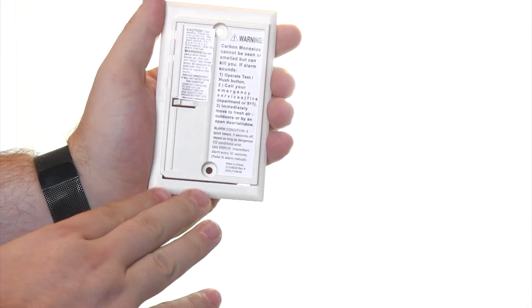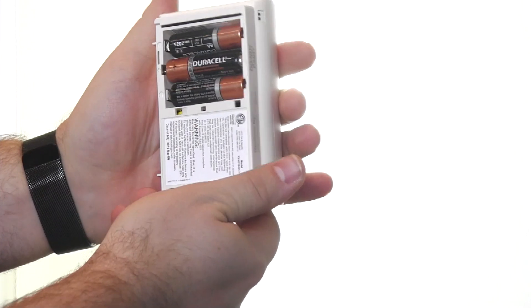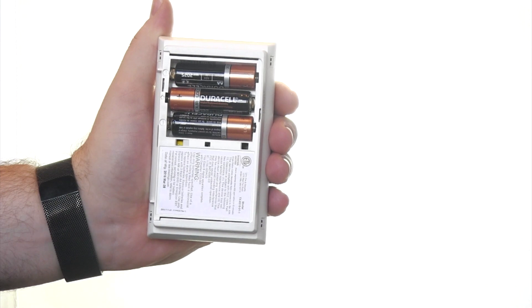The mounting bracket will stay attached to the wall, and we'll be able to take the other device and turn it over. On the back side, you'll notice that there are three AA batteries that already need to be replaced.